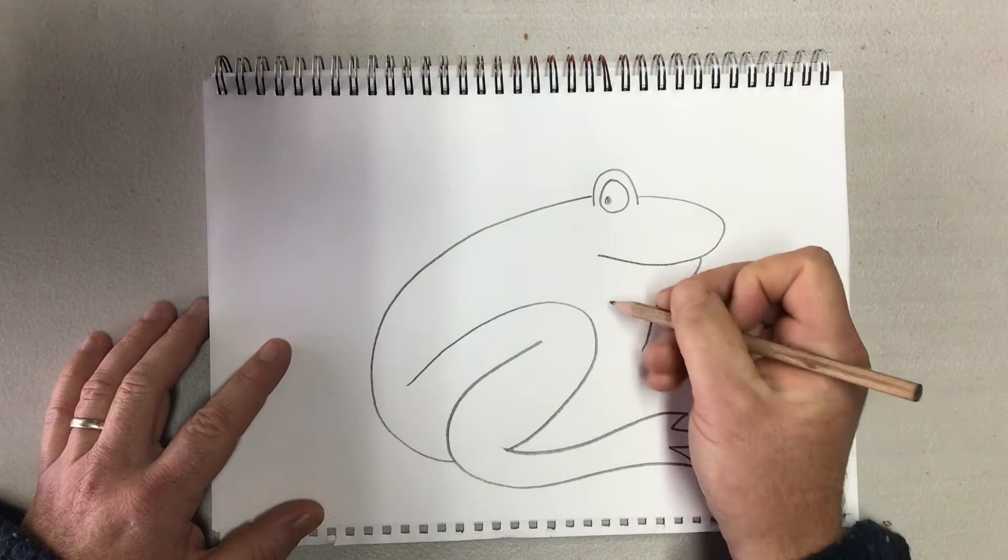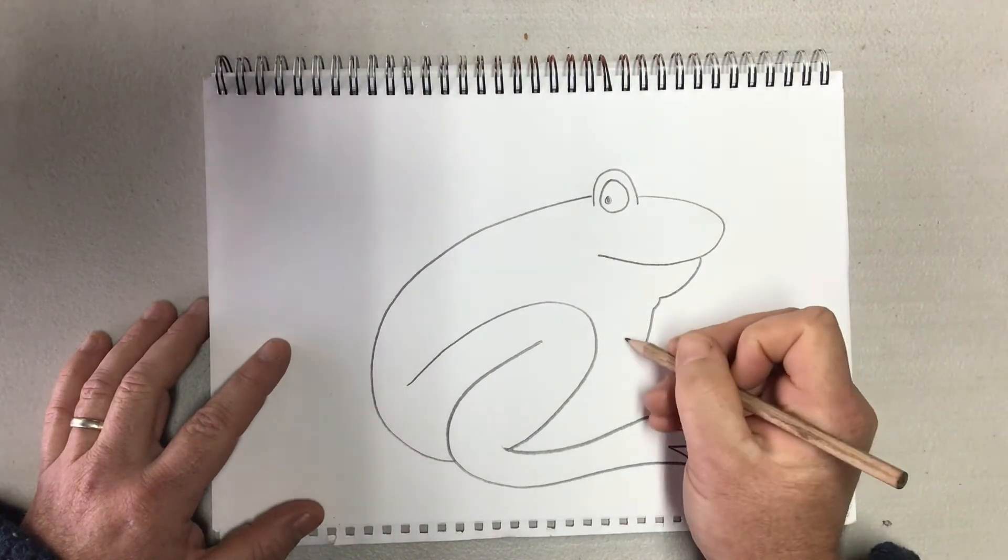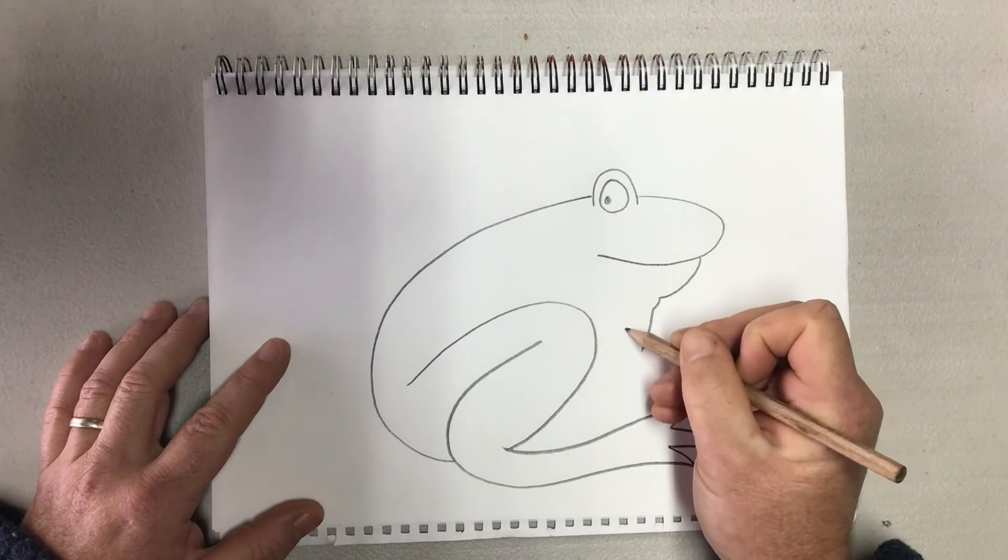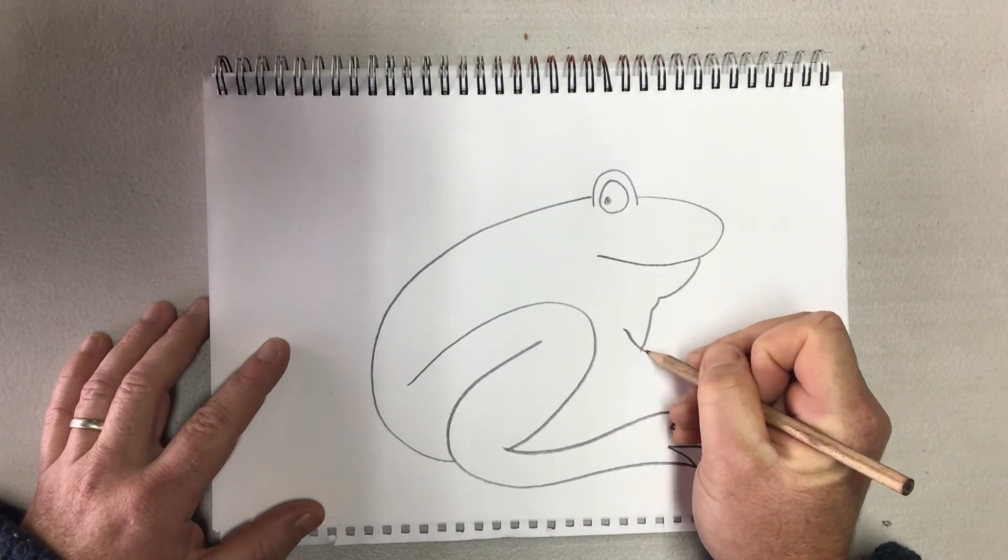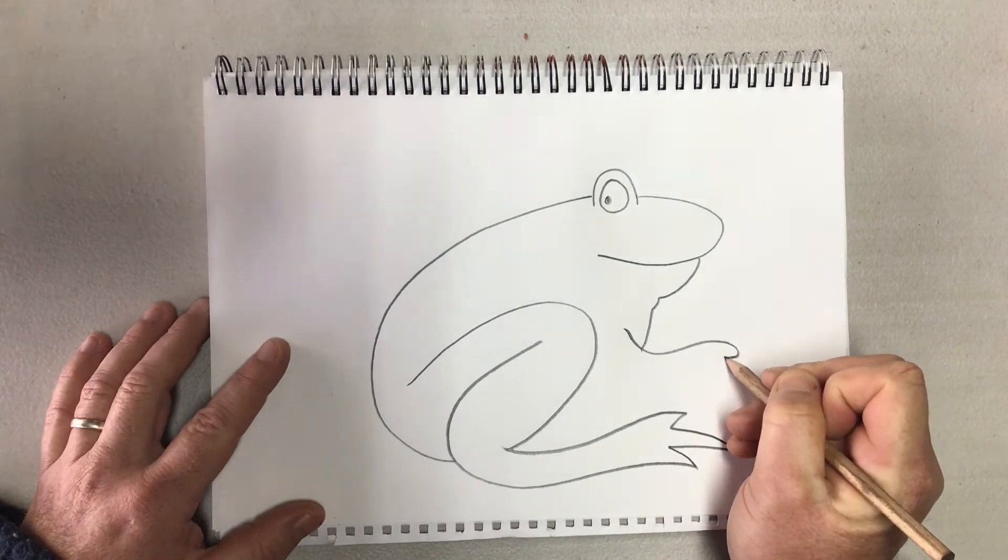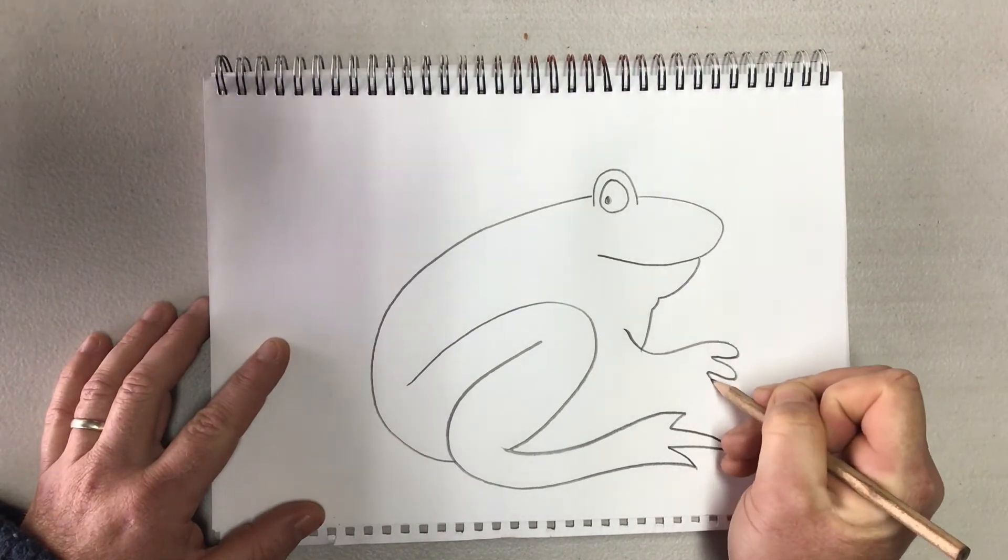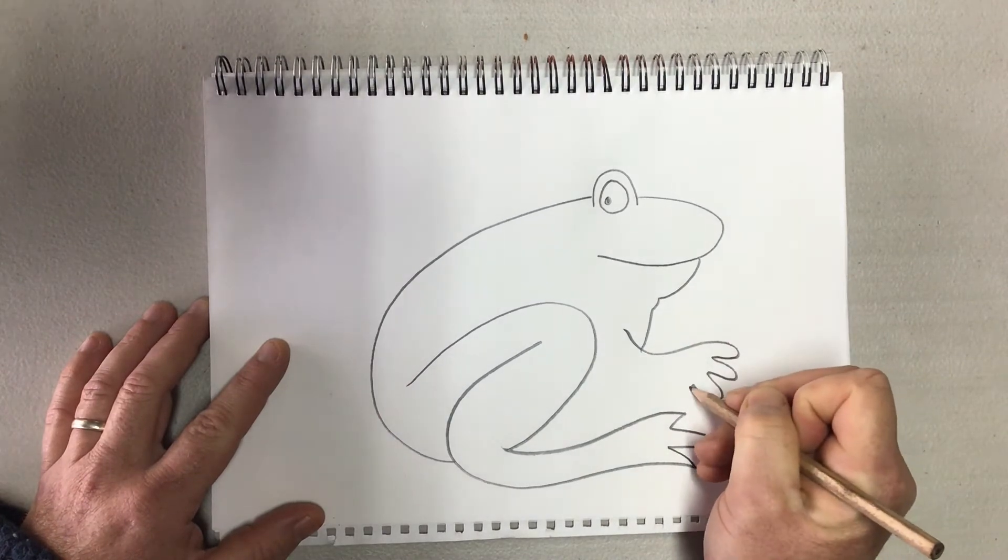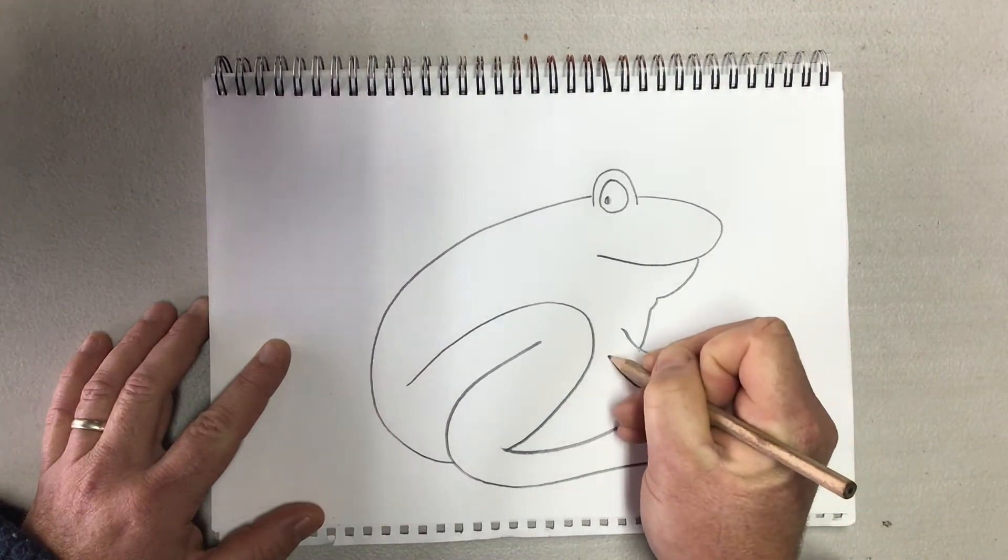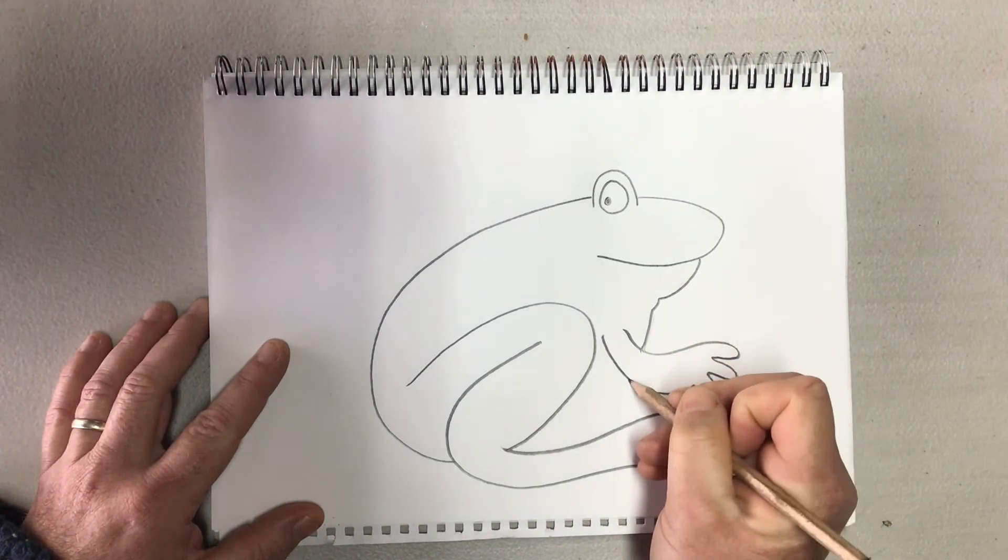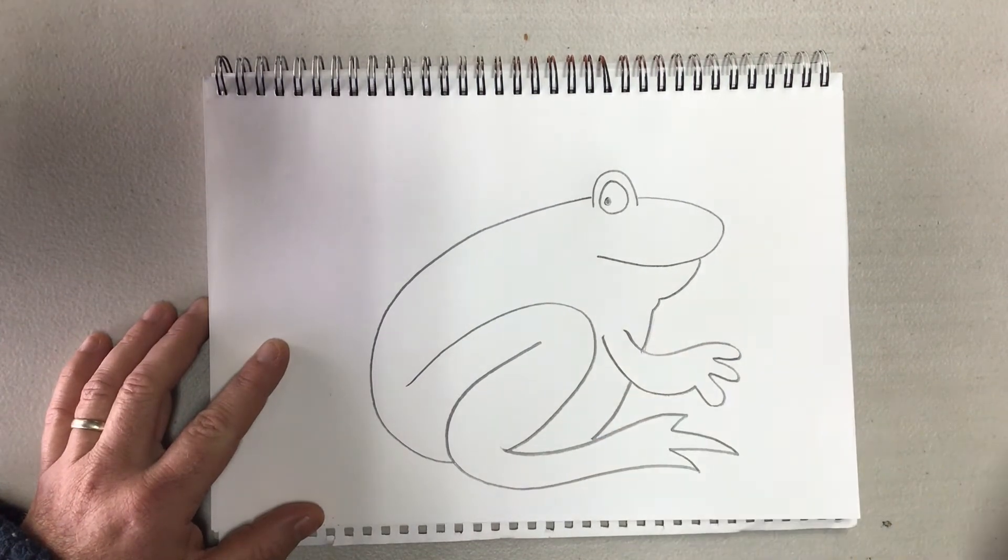For the next part, we're going to put in a front hand to my frog. Coming from about here, I'm going to cross this line here, so let's come down, do maybe three little toes, up like this, and then I'm going to just curl that line back around for his arm. Now this line here, I'm just going to continue that, bring it down somewhere like that.